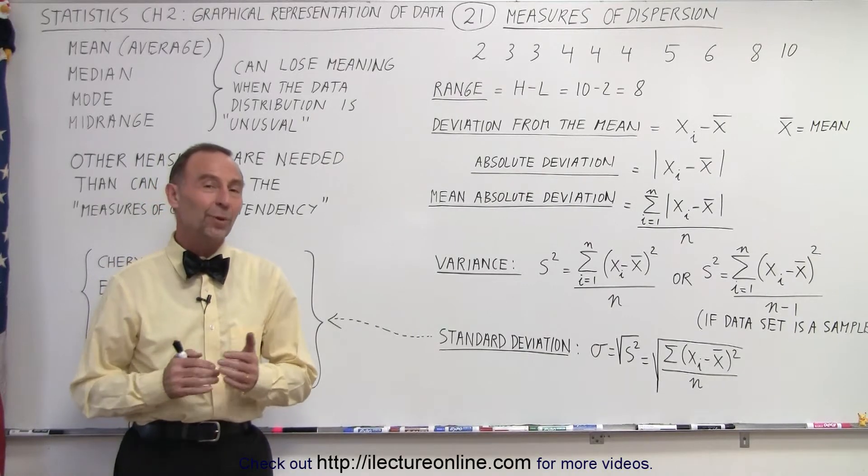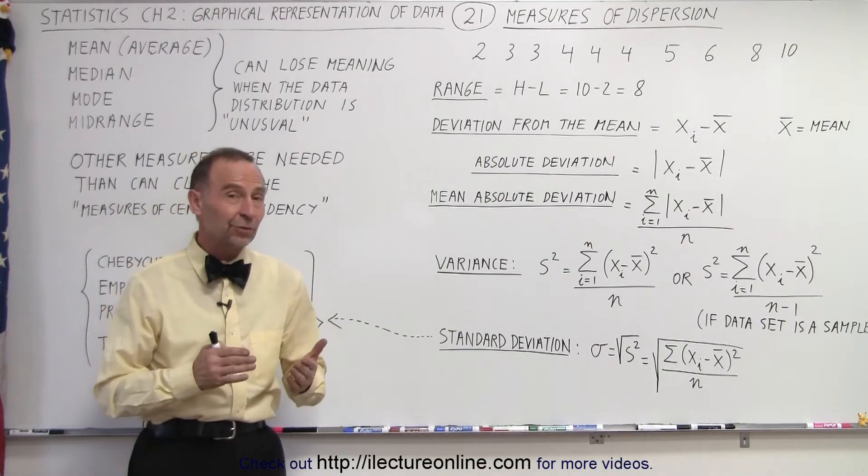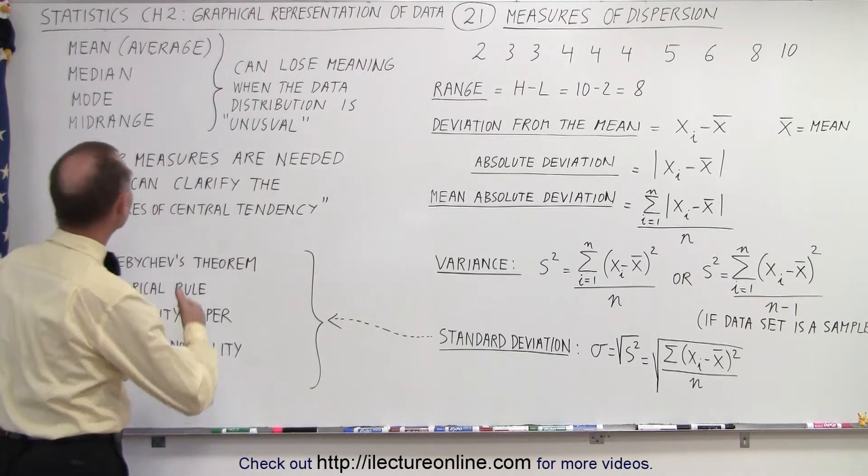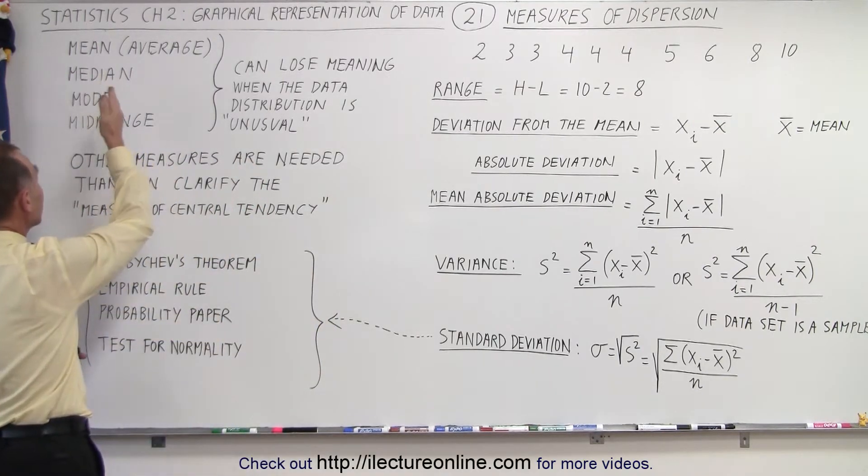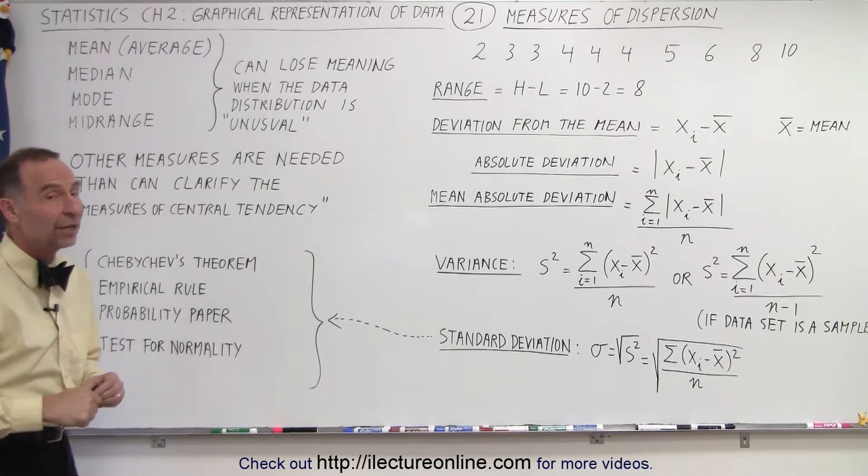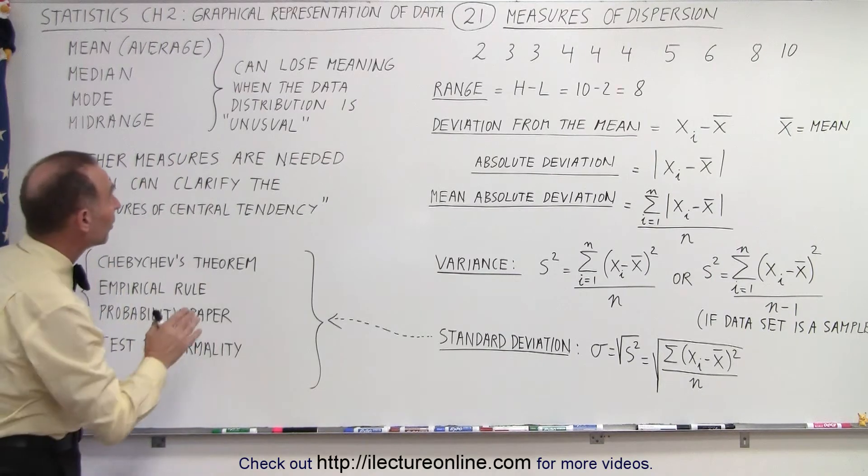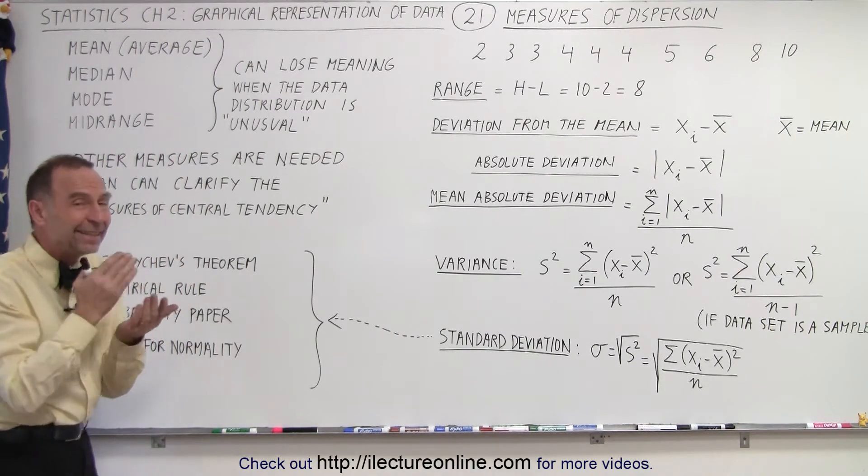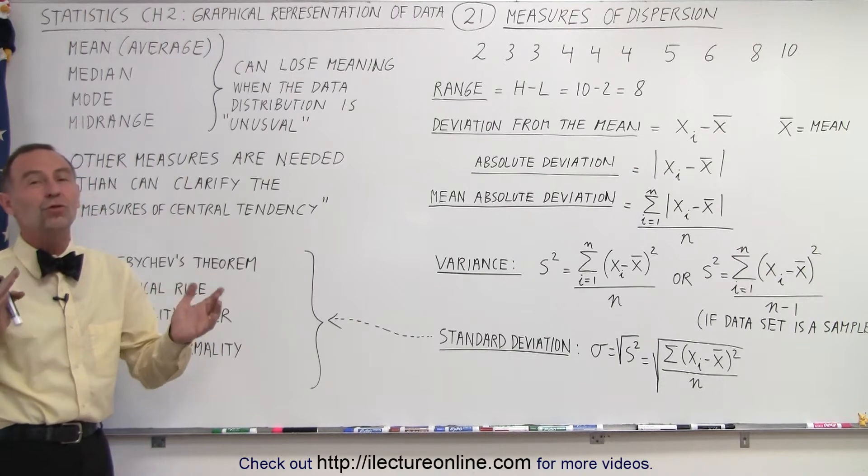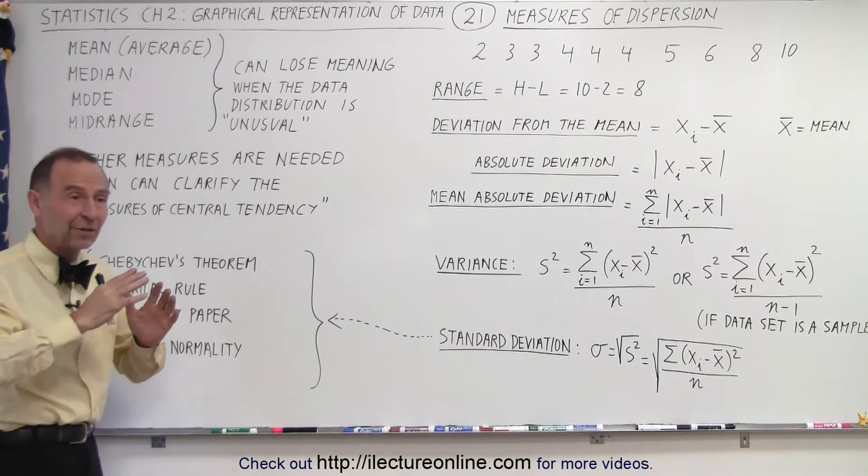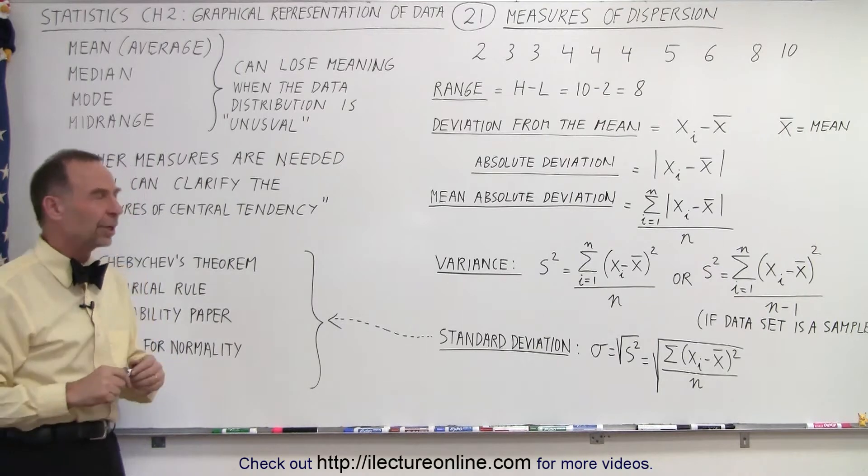Welcome to iLecter Online. We have learned in the previous videos that even though we can get very good information out of the mean, the median, the mode, and the mid-range, sometimes they can lose meaning when the data distribution is unusual. For example, we have certain outliers or we have things skewed in one direction or the other.